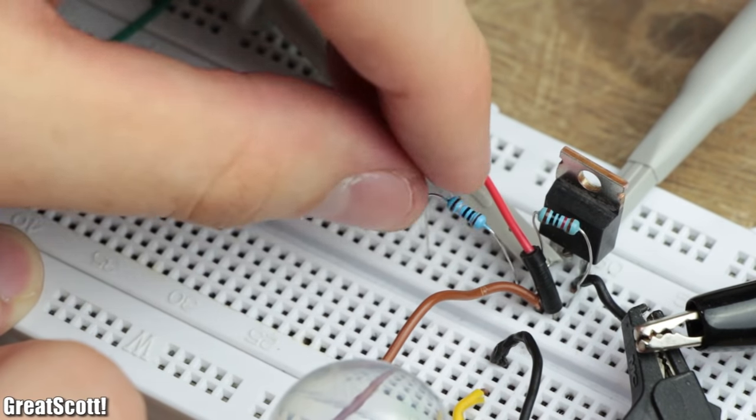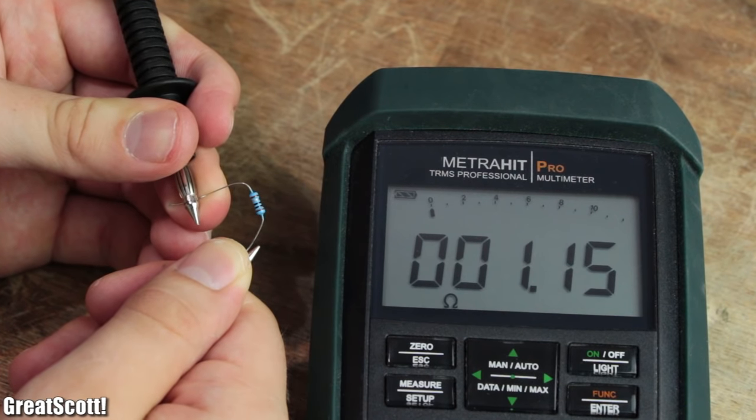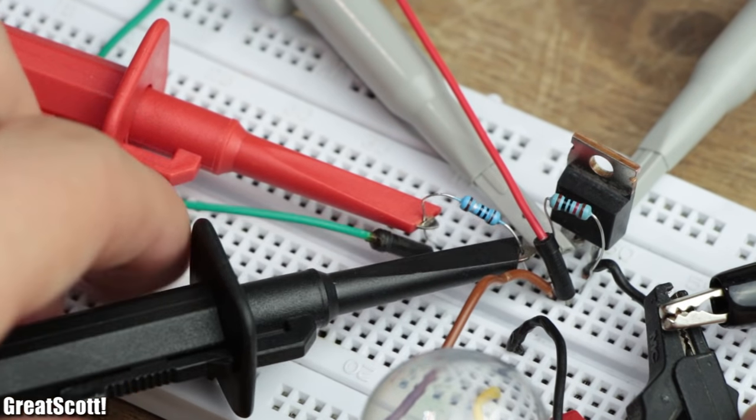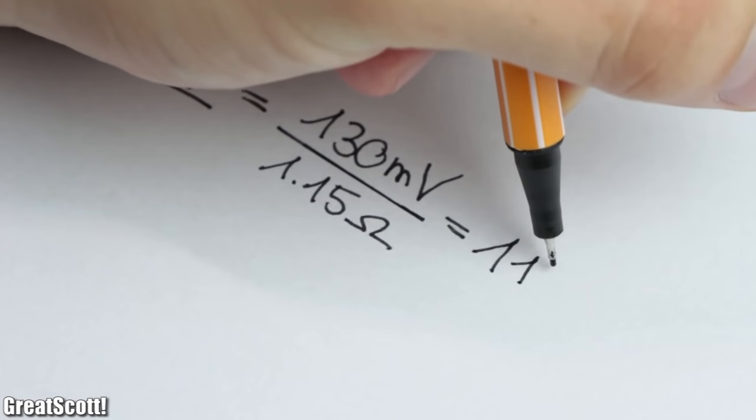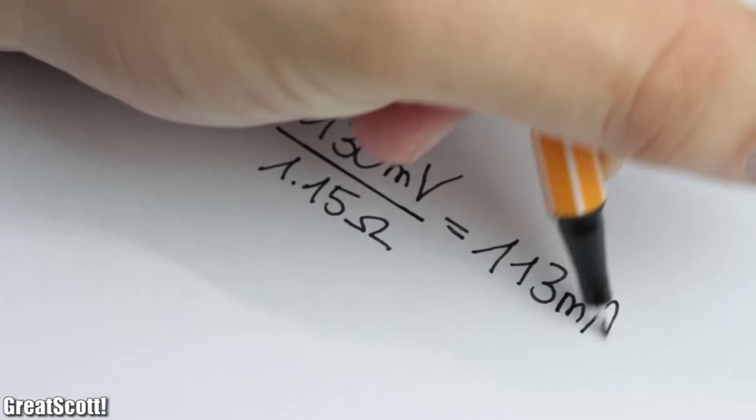To find a possible solution, I placed a 1.15 ohm resistor between the gate and Arduino to determine the peak gate current that is flowing, which seems to be around 113 milliamps.